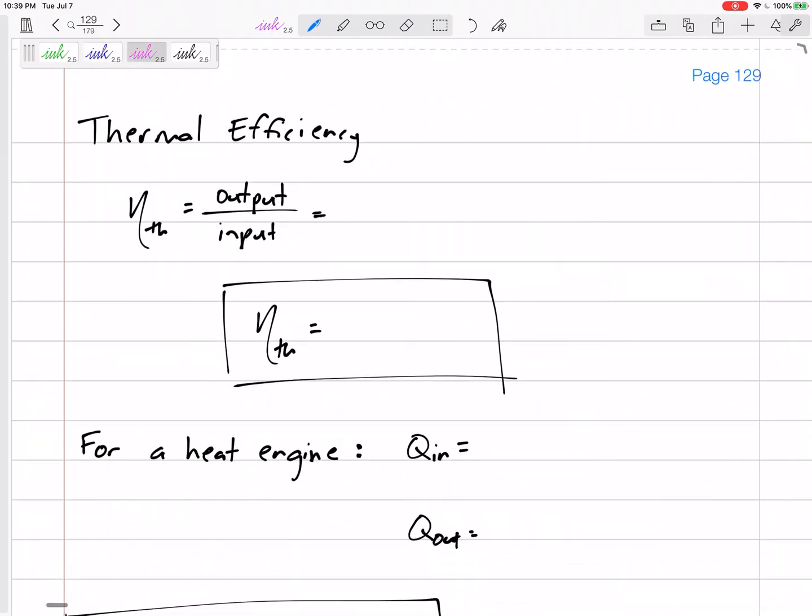Thermal efficiency of heat engines, η_th, is output over input. What is the output? Work net—the net amount of work is what we're interested in. What are we putting into it? Q_in. So η = W_net / Q_in, or since W_net = Q_in - Q_out, we can write η = (Q_in - Q_out) / Q_in = 1 - Q_out / Q_in.